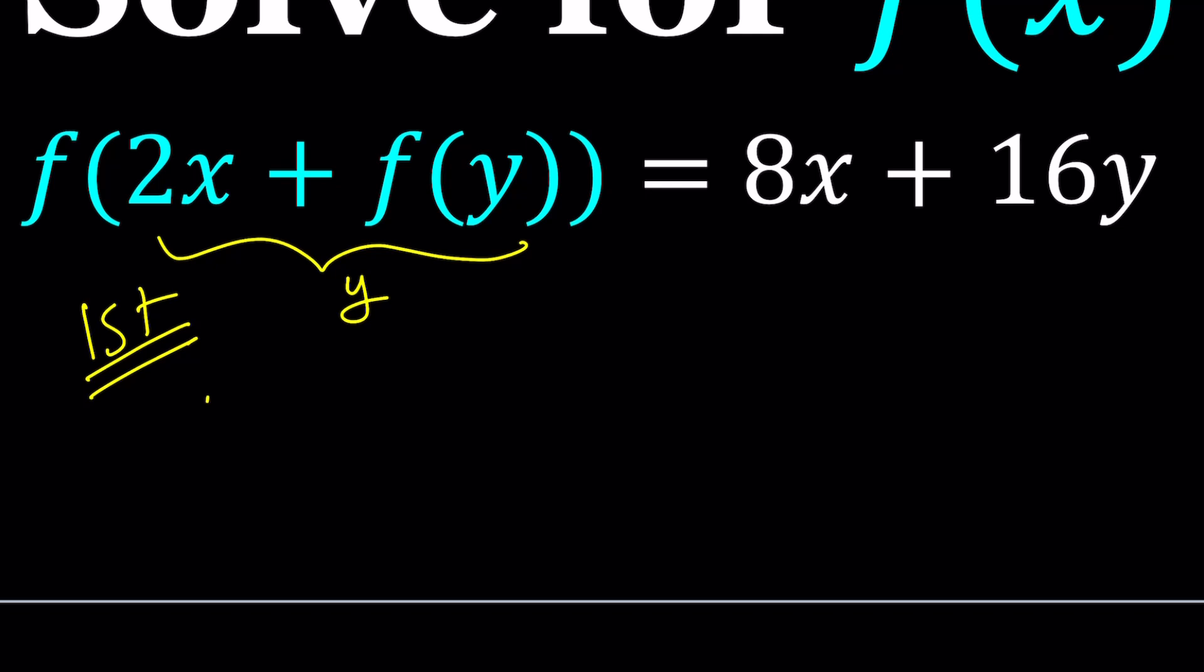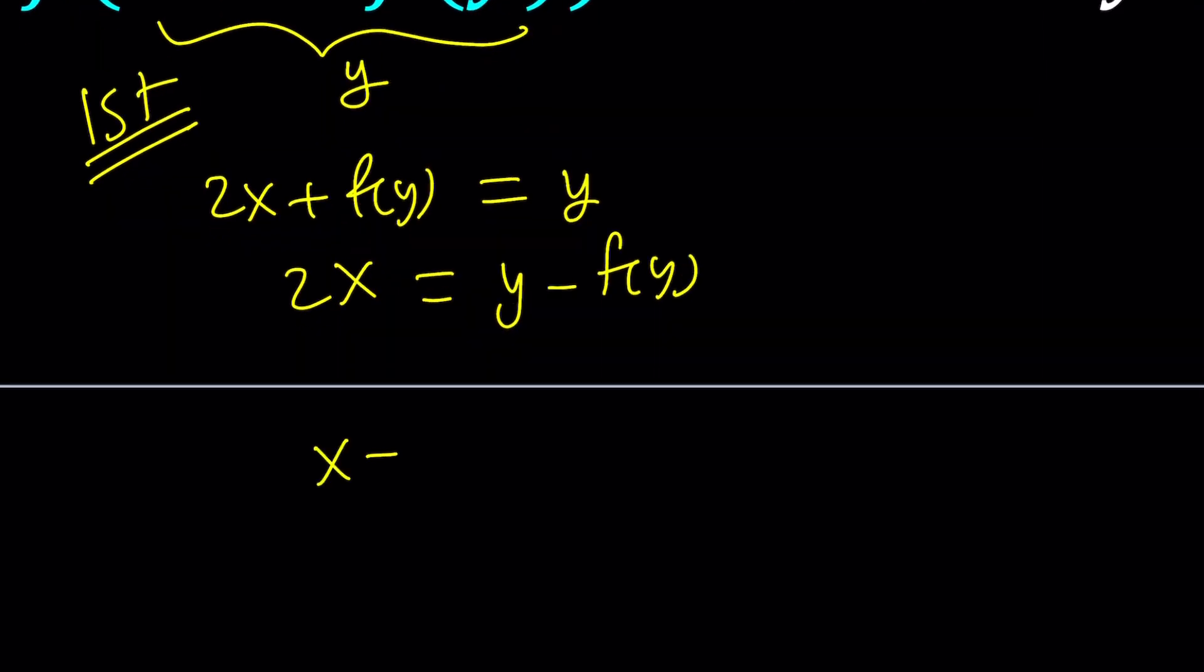So, if you set 2x plus f of y equal to y, this means that 2x is equal to y minus f of y, and then from here, x is going to be y minus f of y divided by 2. So, this is what you need to replace x with on both sides to get what you want.